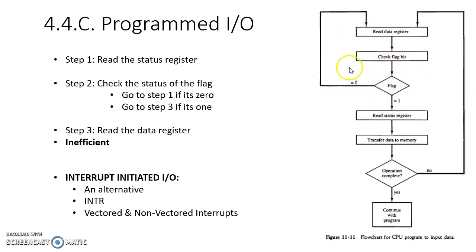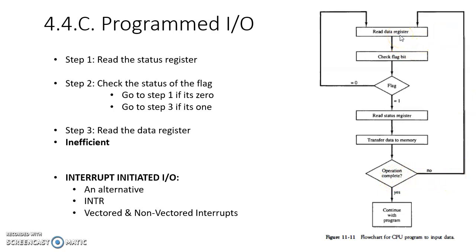In the flowchart, there is a loop — it is an infinite loop. The computer will be executing this infinite loop until the flag becomes 1, meaning until the IO device puts some data into the data register. Note: in the textbook the author has made a mistake in two places — where it says 'read data register' it should say 'read status register', and where it says 'read status register' it should say 'read data register'. These two are interchanged. So: first read the status register, check the flag; if flag is set, read the data register and transfer the data to memory. If the operation is not complete, go back and check the status register again.